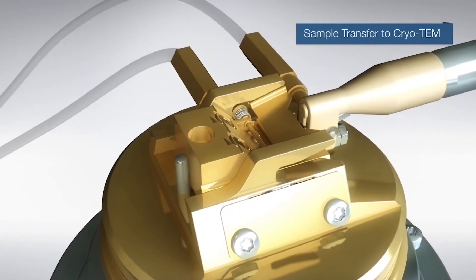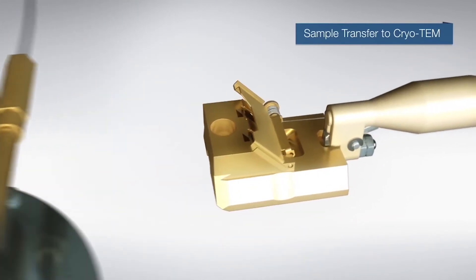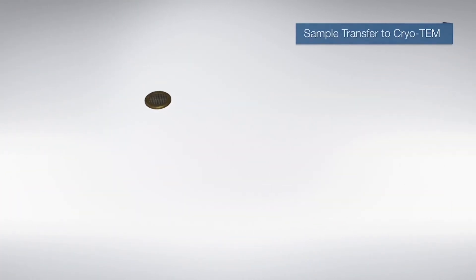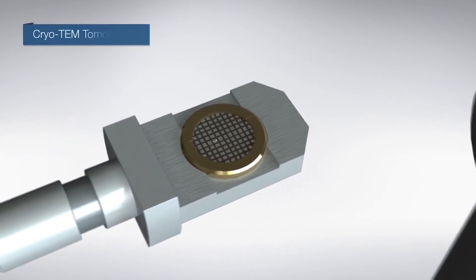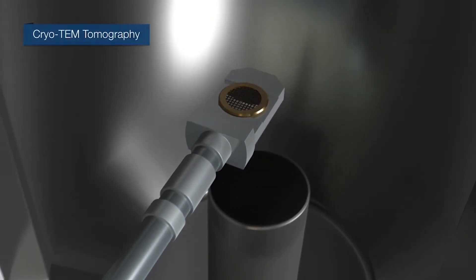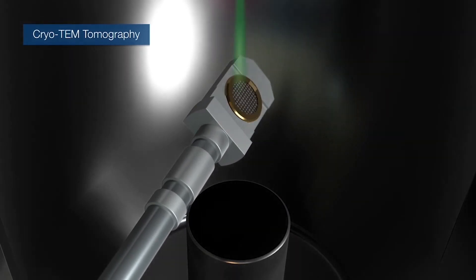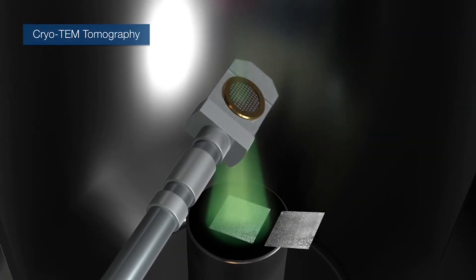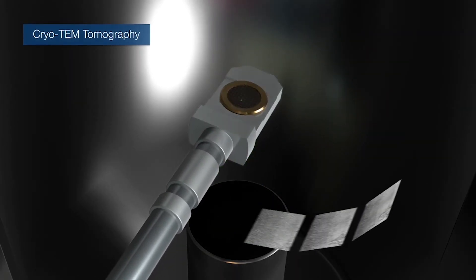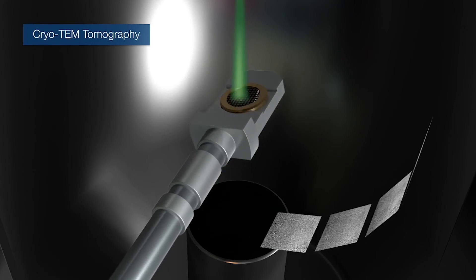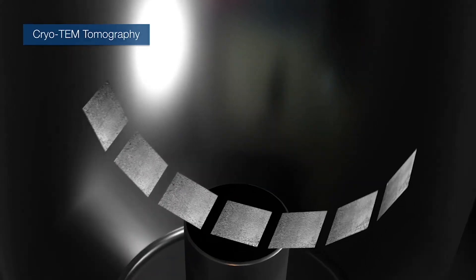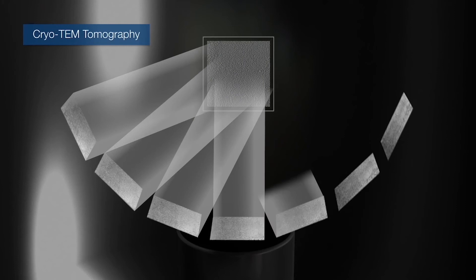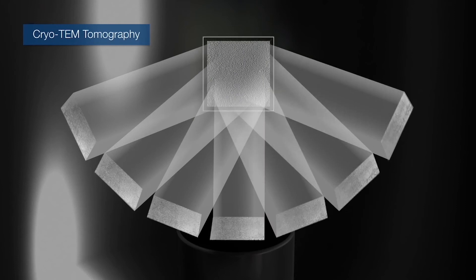For high-resolution imaging, the sample is transferred to a transmission electron microscope equipped with the so-called Volta phase plate, another in-house development that dramatically improves image quality. We record high-magnification images of the aggregate from different directions by tilting the cell within the microscope.